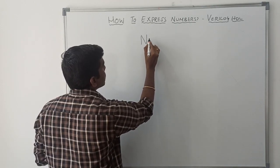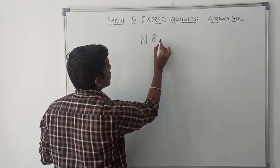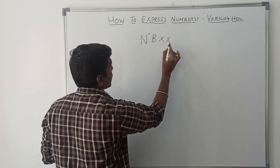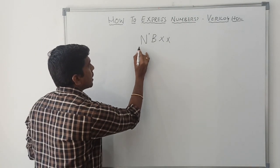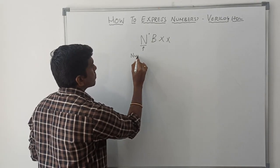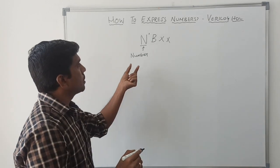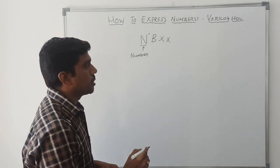N tick B X X. This N represents numbers, how many bits we can use inside the program.